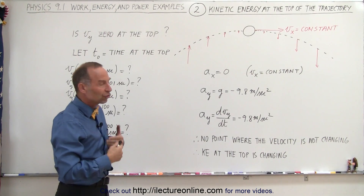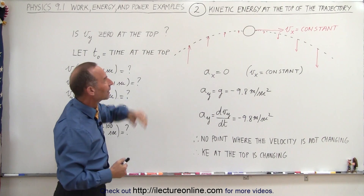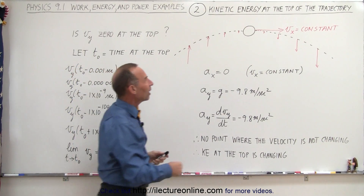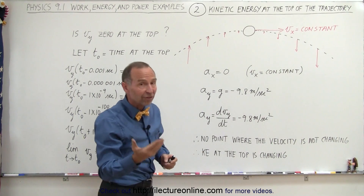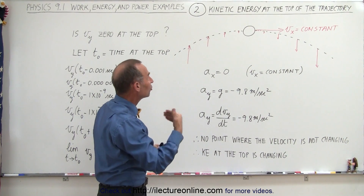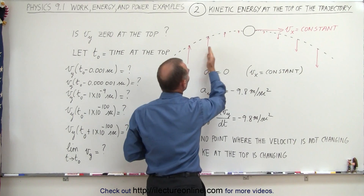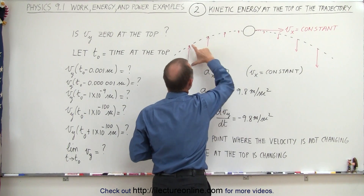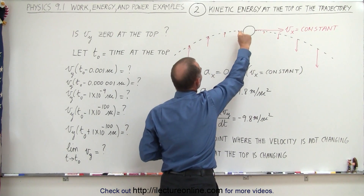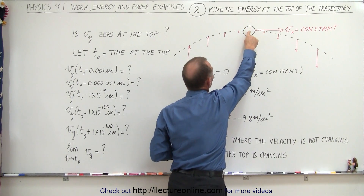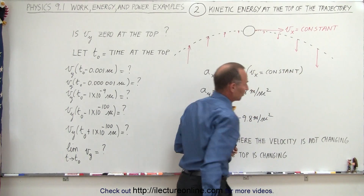We know that in a trajectory, when you have an object that is moving in a parabolic path like that, the velocity in the x direction will always be constant. However, the velocity in the y direction is constantly changing. Notice that as the object reaches its maximum height, the velocity in the y direction will decrease until it reaches zero, and then the velocity will begin to increase in the negative direction.